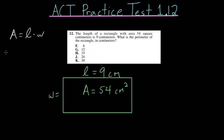We have an equation where we know the area is 54, we know the length is 9, and we just have to solve for the width. Dividing each side by 9, we find that the width is 6 centimeters.